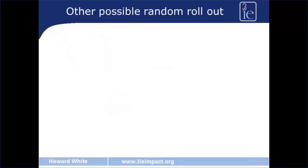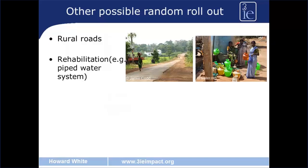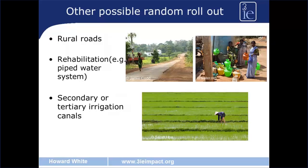We can imagine other examples of using randomised rollout for infrastructure investments. Take the example of rural roads: we have a large programme of reconstructing and rehabilitating rural roads, say 50 to 60 of them, and we can randomise the order in which we do it. Similarly, if we are rehabilitating a piped water system, we can randomise the order in which that rehabilitation takes place. And finally, with an irrigation system, we can randomise the order of the construction of secondary or tertiary canals.